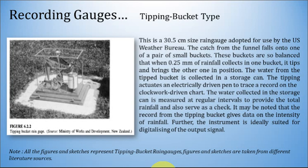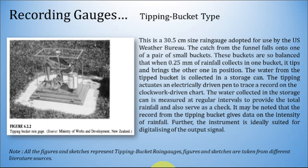This is a 30.5 cm size rain gauge adopted for use by the United States Weather Bureau. The catch from the funnel falls onto one of a pair of small buckets. These buckets are so balanced that when 0.25 mm of rainfall collects in one bucket, it tips and brings the other into position. The water from the tipped bucket is collected in a storage can. The tipping actuates an electrically driven pen to trace a record on a clockwork-driven chart. The water collected in the storage can is measured at regular intervals to provide total rainfall and serve as a check. The record from the tipping bucket gives data on intensity of rainfall, and the instrument is ideally suited for digitalizing the output signal.